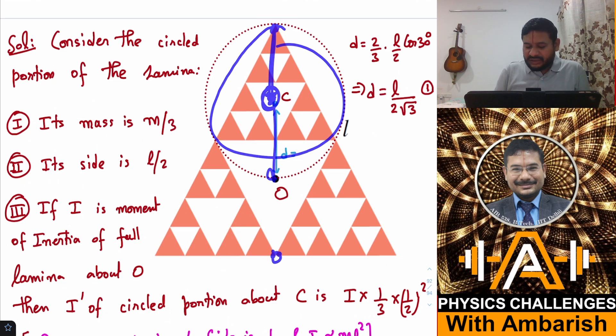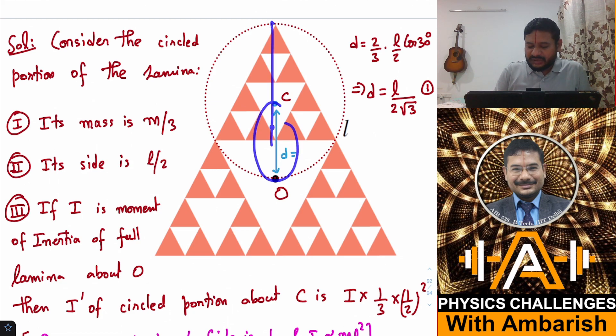If you consider this triangle from tip to this point, the distance is two-thirds of the median. Similarly for this white triangle, distance from the tip to this part is two-thirds of the median. That means C to O distance should again be equal to two-thirds of the median.